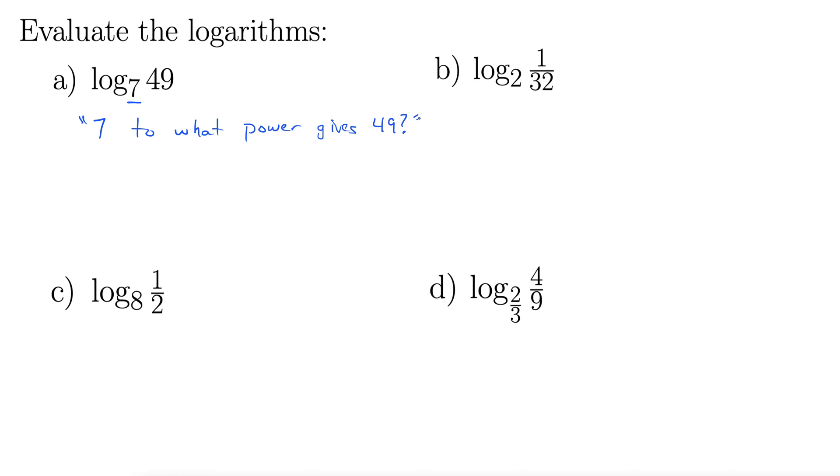That's always how you do it with these logarithms in this form. Note that there's no x's—it's not an equation. We're just trying to evaluate these logarithm expressions. You start with the base and say, the base to what power gives whatever is inside the logarithm. So 7 to what power gives 49? Well, clearly 7 squared gives 49, so the answer is 2.